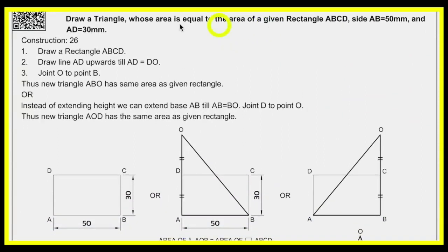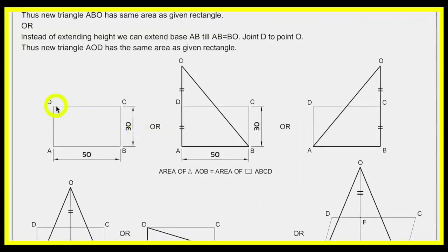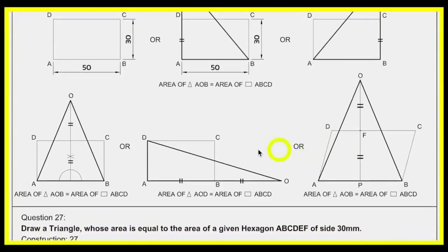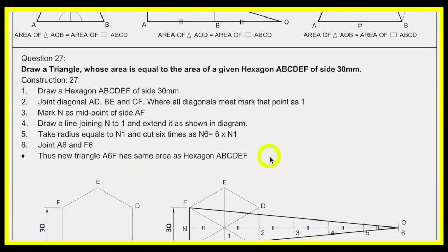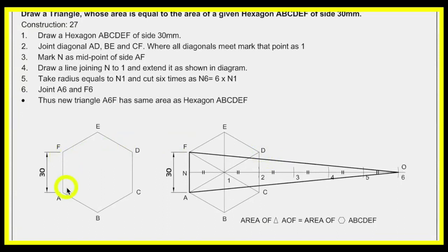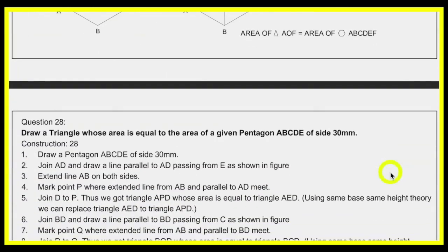For area conversion — converting a rectangle into a triangle: double the height, or take it from the middle, or double the base; all three methods are correct. This applies to parallelograms too. For converting a hexagon into a triangle: a hexagon is made of six triangles, so take the height six times. A square is made of four triangles so take height four times; pentagon five times; hexagon six times.